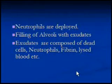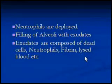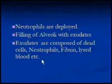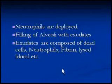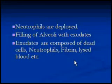The alveoli get filled with exudates, which are composed of dead cells, neutrophils, fibrin, and lysed blood — especially lysed RBCs (broken down red blood cells). It is this lysed blood which gives the brownish color to the sputum of an infected person. Fibrin comes from fibrinogen, which is a blood plasma protein and is part of the healing process.